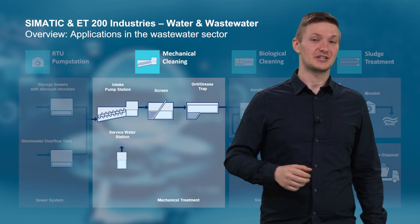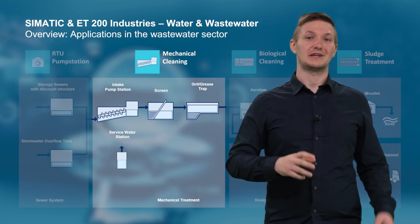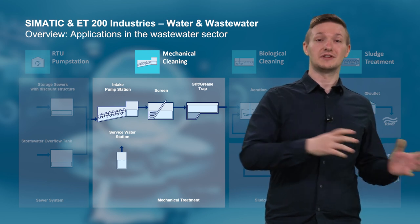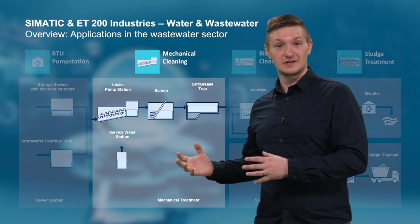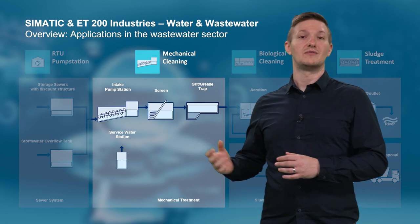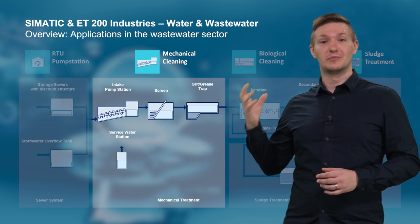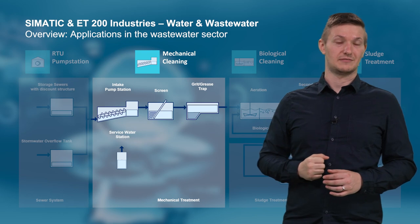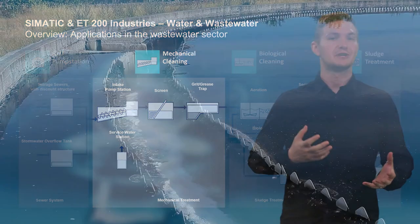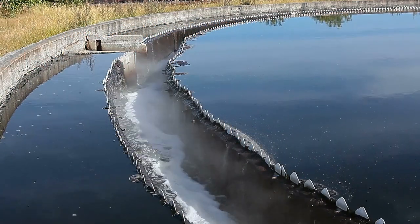Let's take a look at mechanical treatment. After the wastewater enters the treatment plant through the feed lines, the first step is to mechanically remove larger pieces from the wastewater. This is done with the help of grid screens and the sand and grease trap.